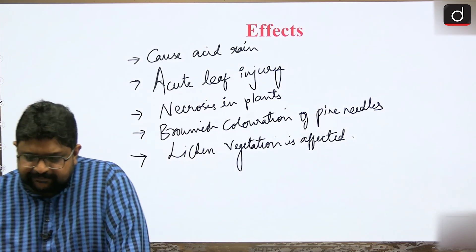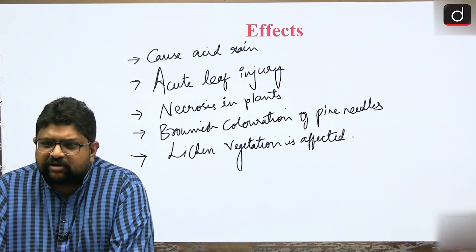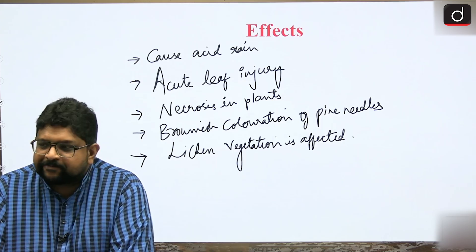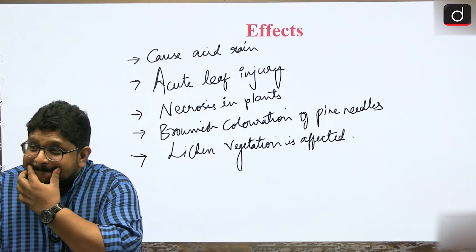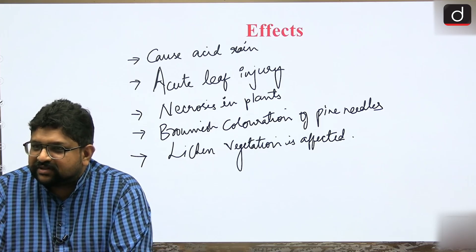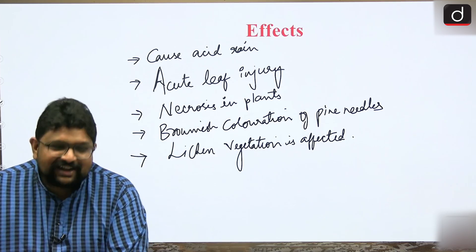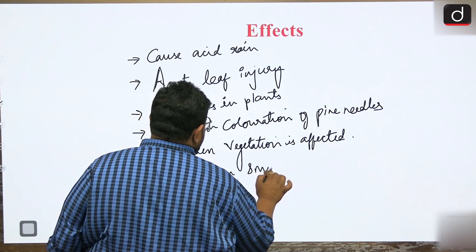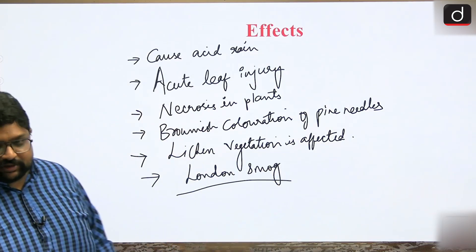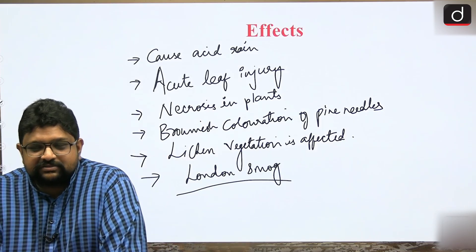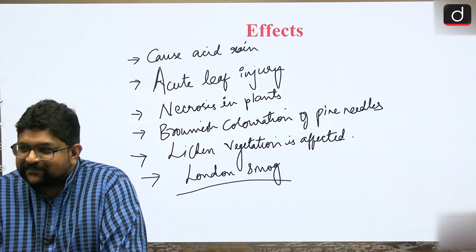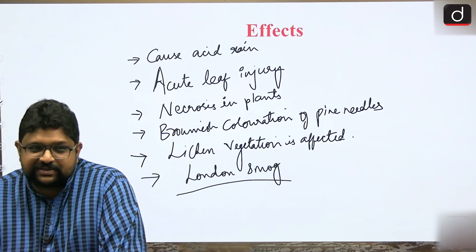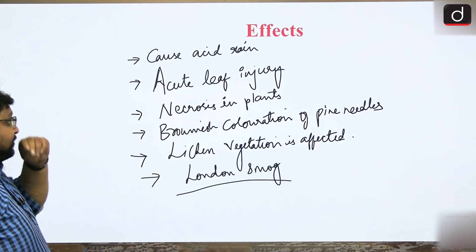SO₂ also contributes to acid rain and produces smog. The smog associated with sulphur dioxide is called London smog, also known as sulfuric smog. In contrast, nitrogen oxides and smoke create Los Angeles smog, which is photochemical smog. So these are the main effects of sulphur dioxide.